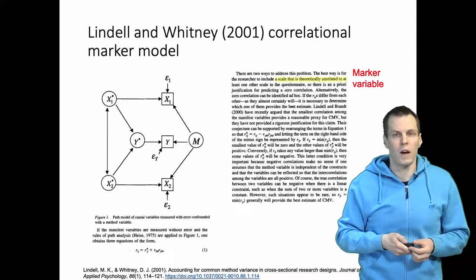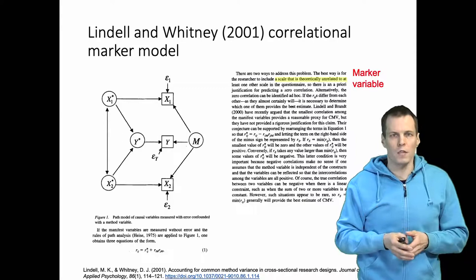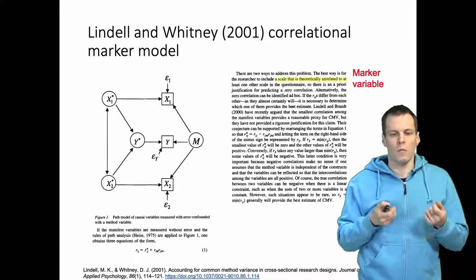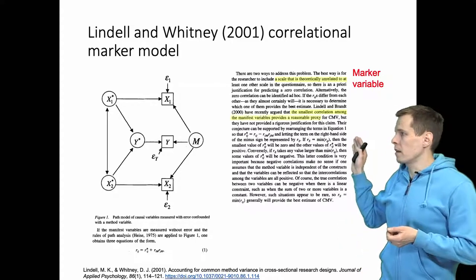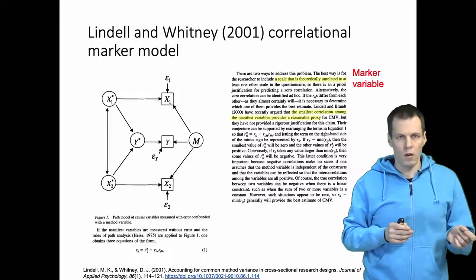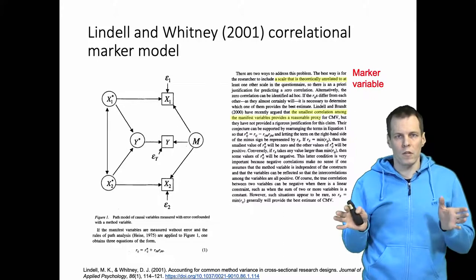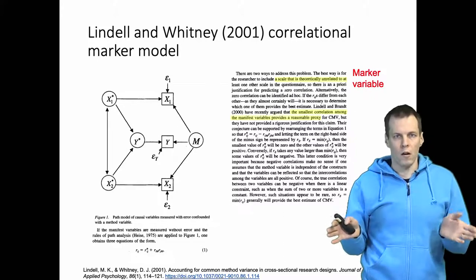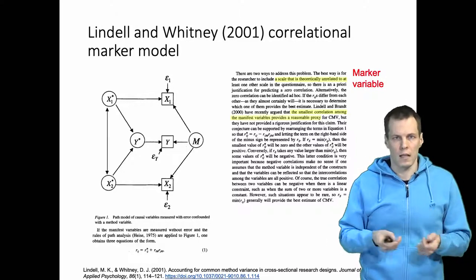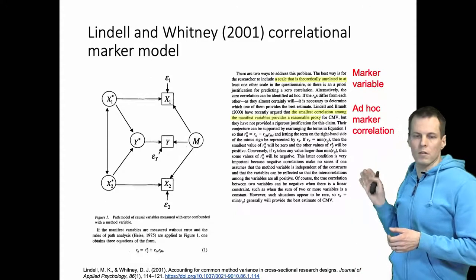You find a theoretically unrelated variable and then there are a few different ways of estimating the effect of method variance using the marker. The approach that Lindell and Whitney recommend is taking the smallest correlation between the marker and all the other items. If markers that are prior designed are not available, then take the smallest correlation of all the study variables and use that as a proxy for method variance. This is called the ad hoc marker correlation approach.